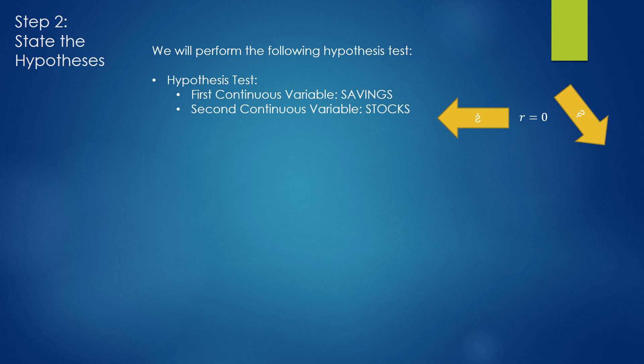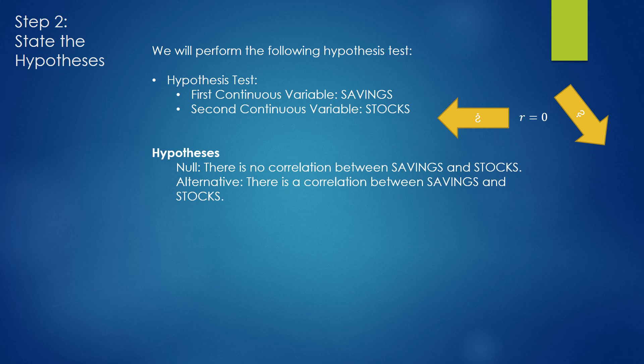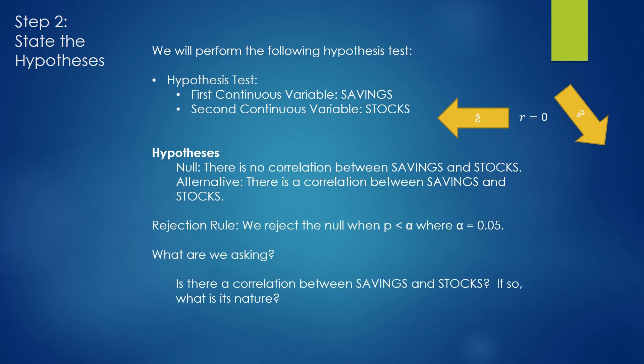Now that we know everything we need to know, we can actually start writing down the hypothesis test. First off, we know the two variables. We're going to be looking into the correlation between savings and stocks, if any. Using the previous slide, we can write down the null and alternative hypotheses, as you see here, and express the rejection rule. Finally, we are asking whether there is a correlation between savings and stocks. If so, what is its nature? And by nature, I mean, what is the value of r?